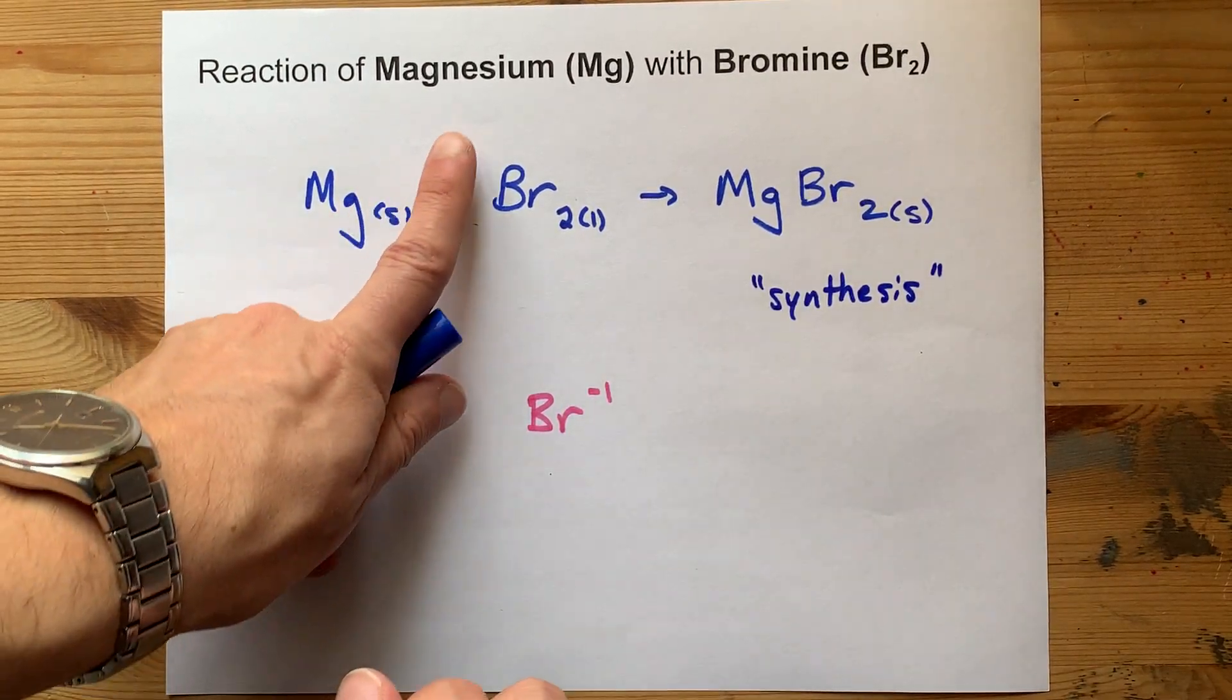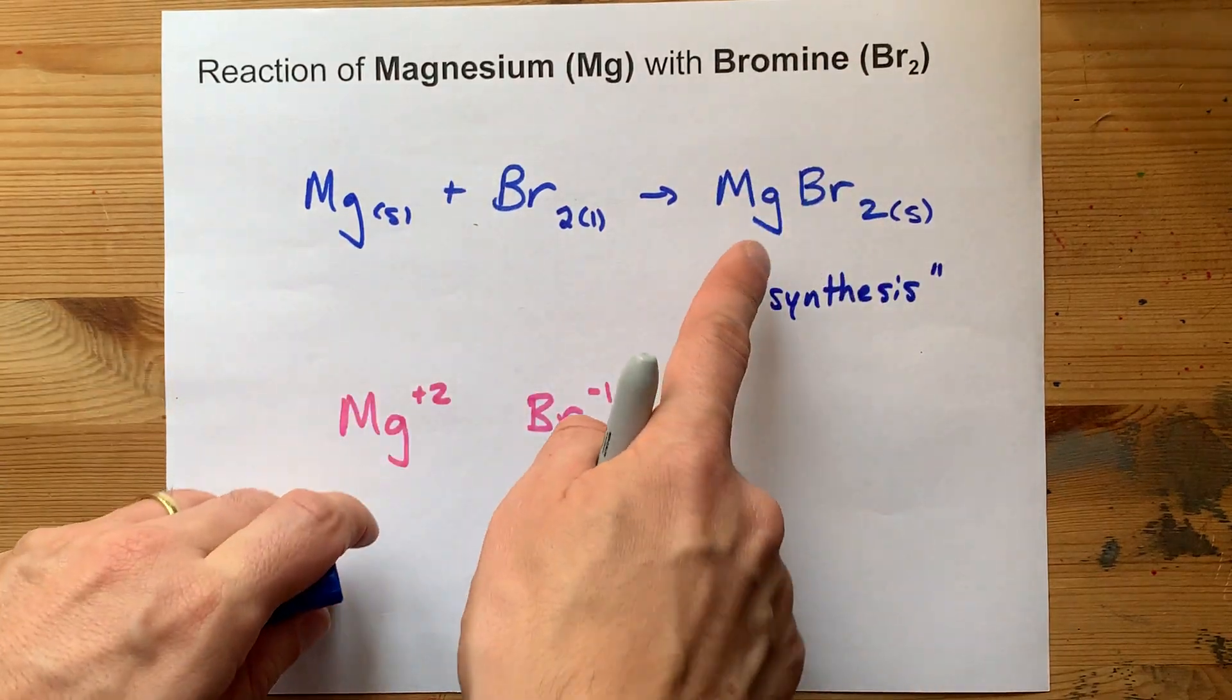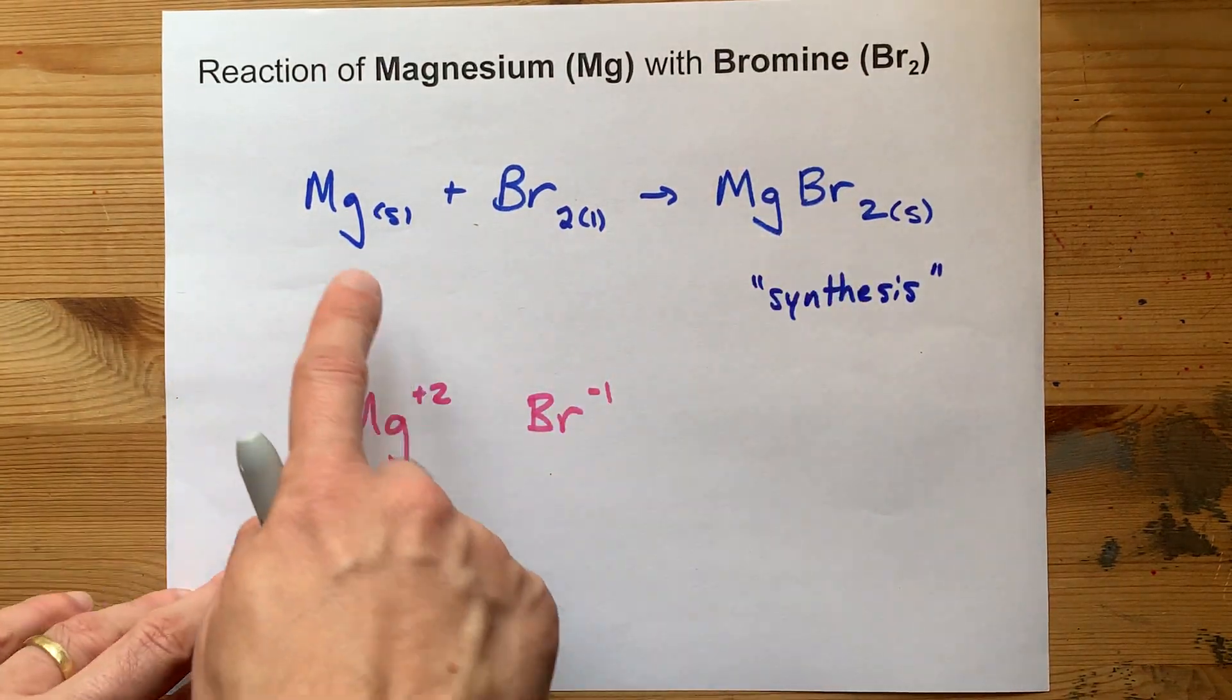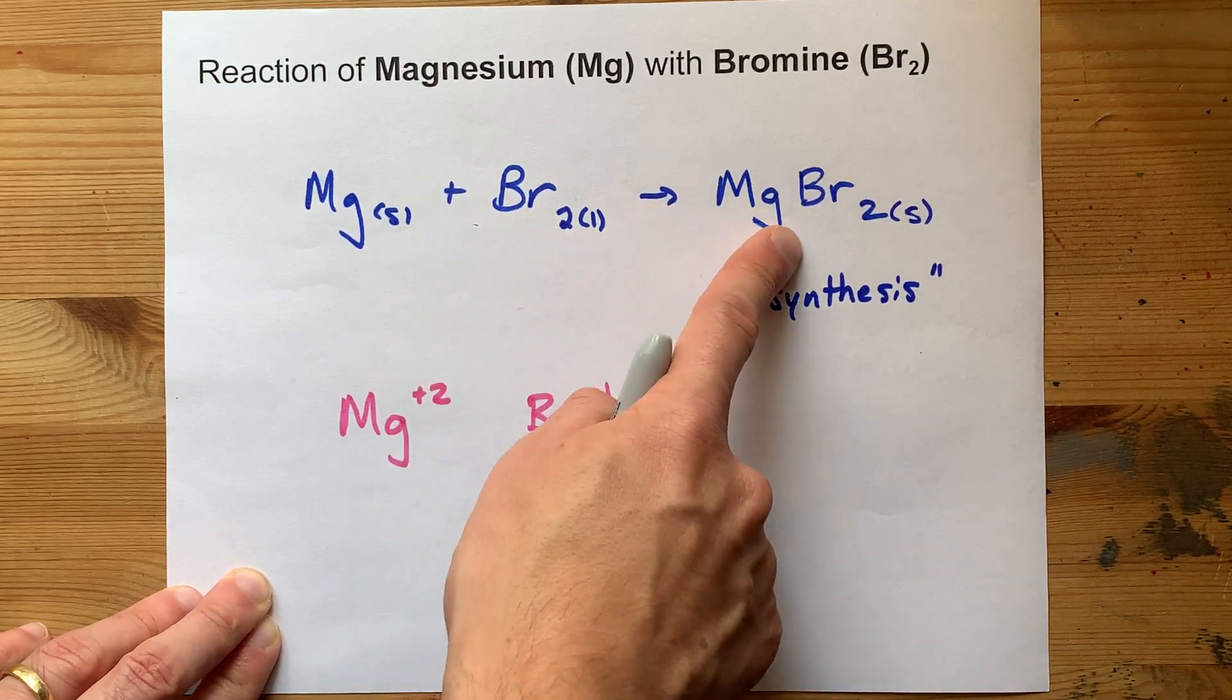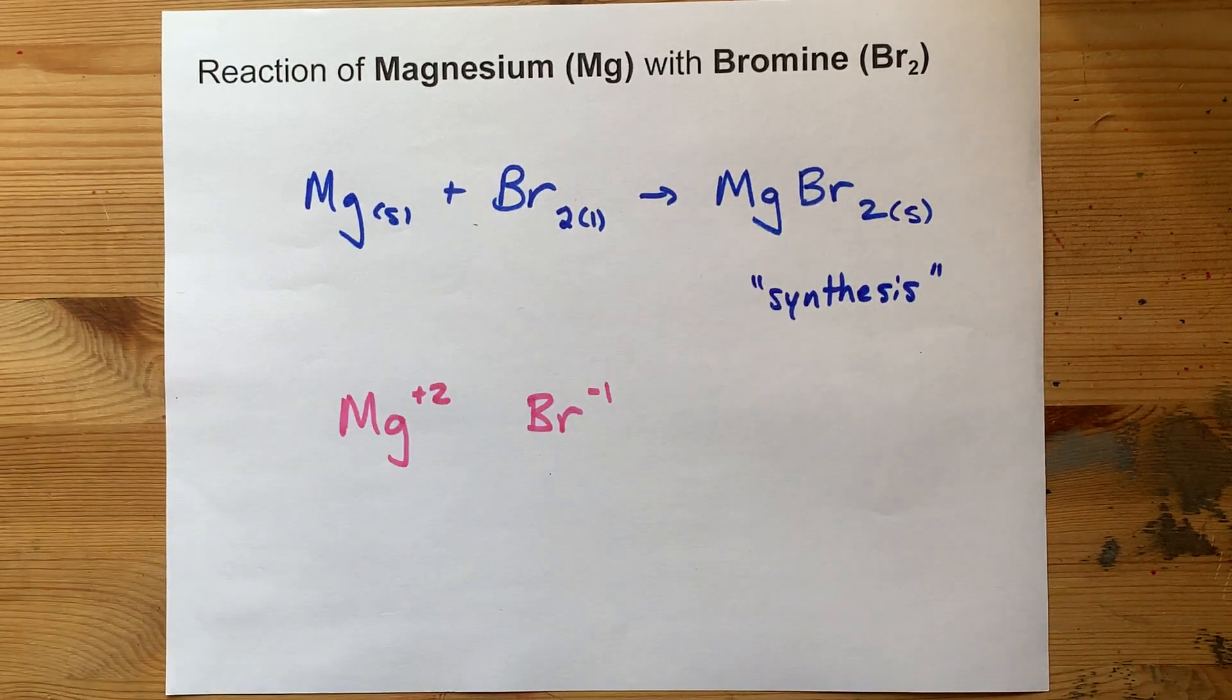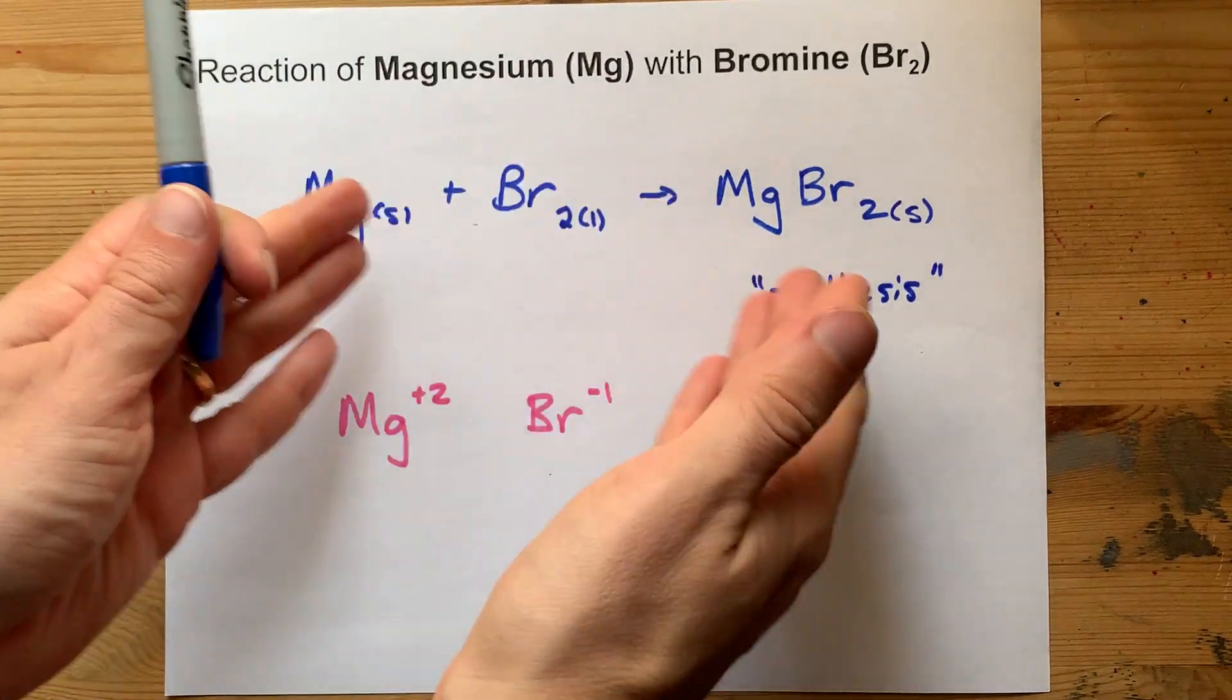So metal plus non-metal makes an ionic compound. Pure magnesium will react with pure bromine to form magnesium bromide. Best of luck.